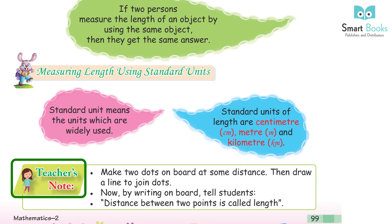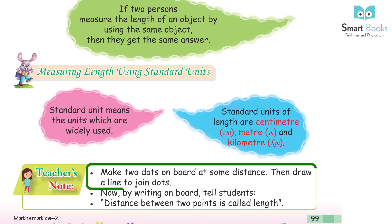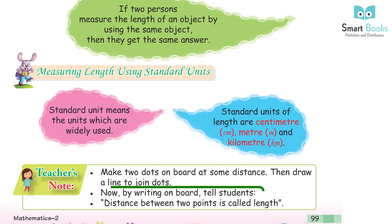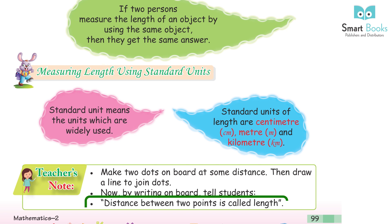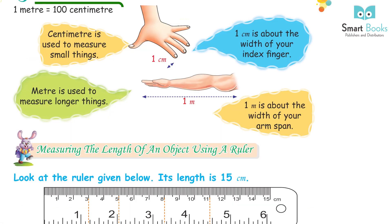Teacher's Note: Make two dots on the board at some distance, then draw a line to join the dots. By writing on the board, tell students that the distance between two points is called length. 1 meter is equal to 100 centimeters.